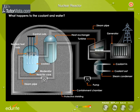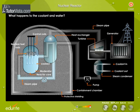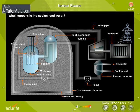The coolant, now at a lower temperature, is pumped back into the reactor core. The steam, also at lower pressure, is cooled in a condenser and circulated back to the heat exchanger.